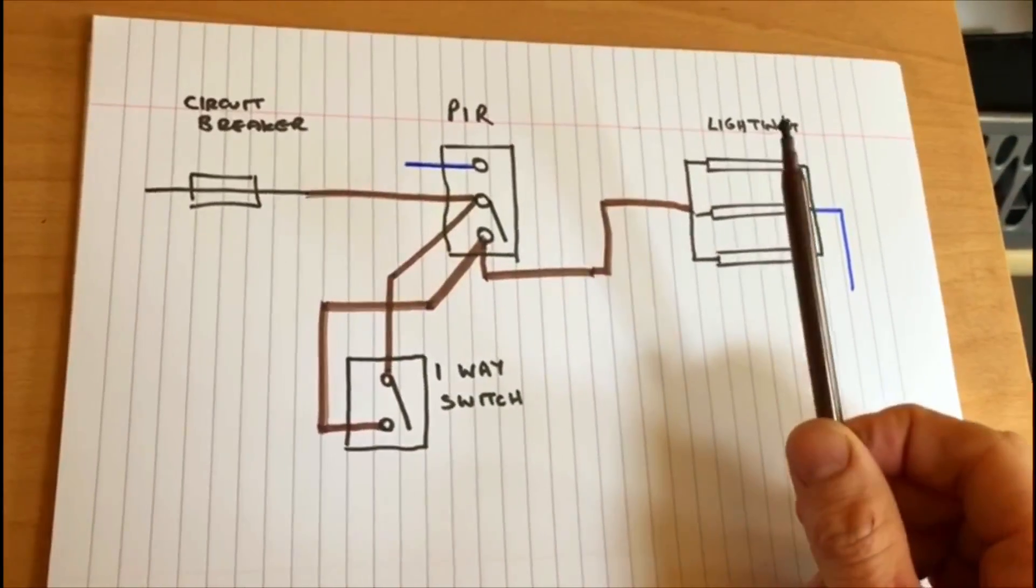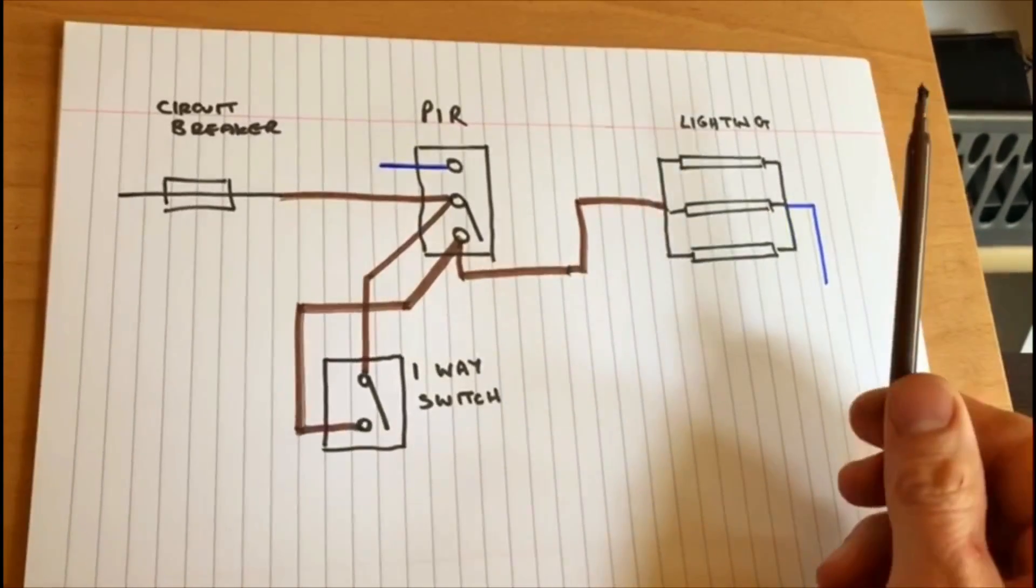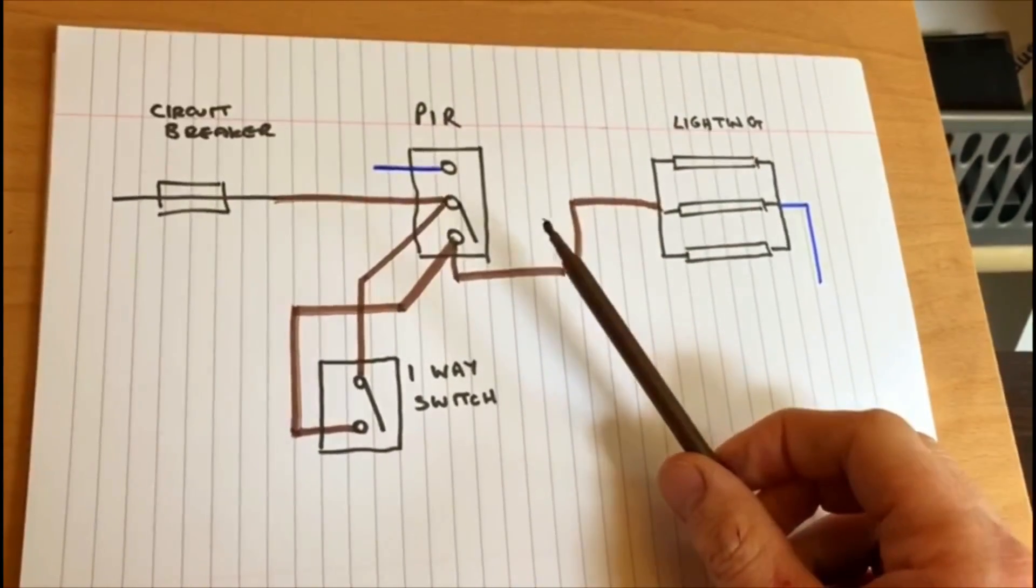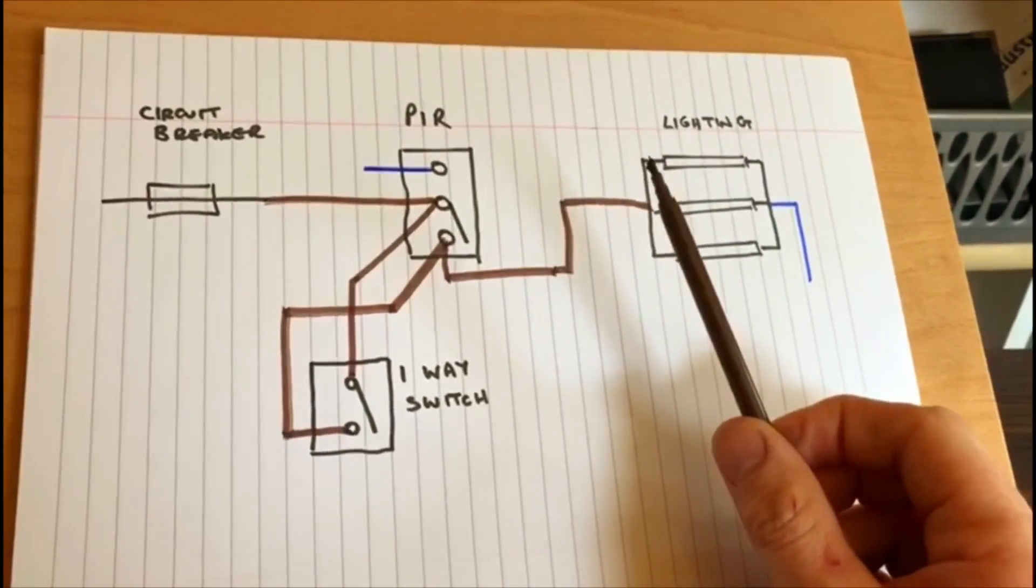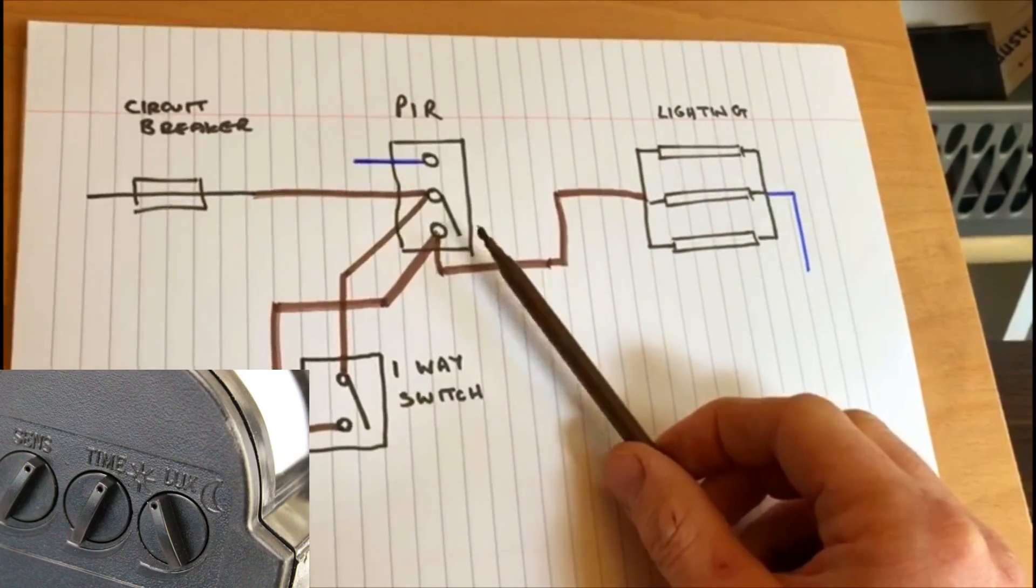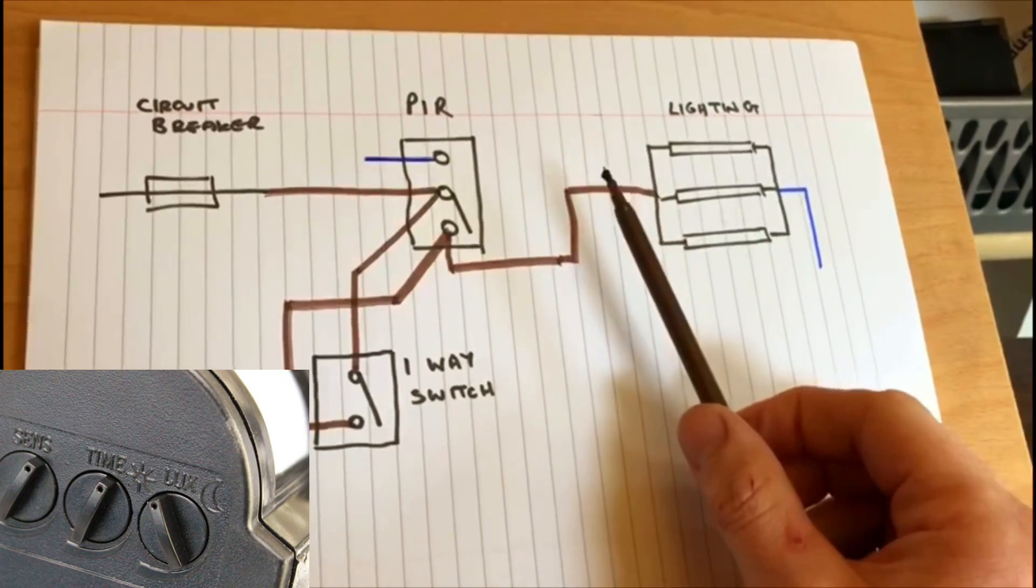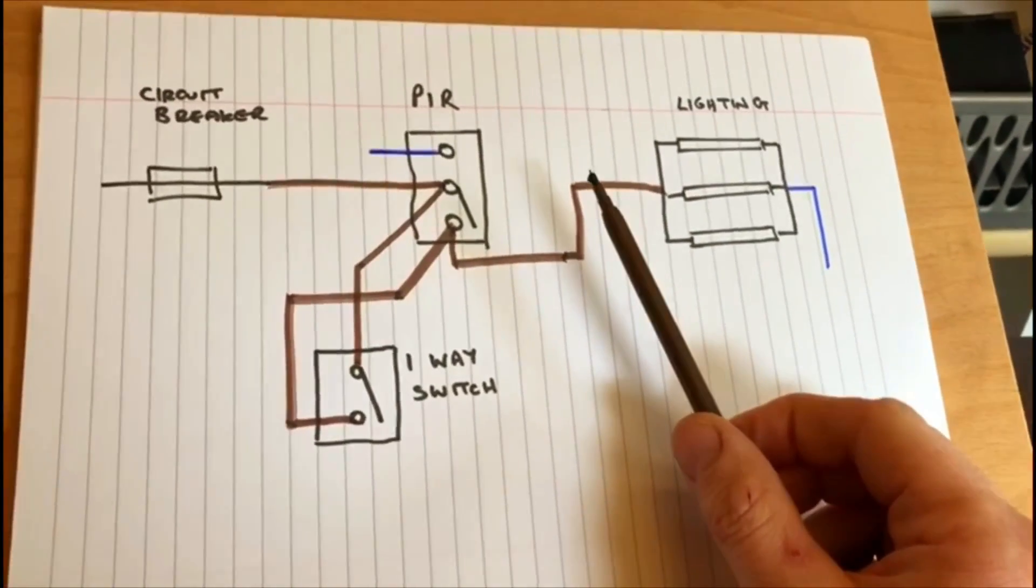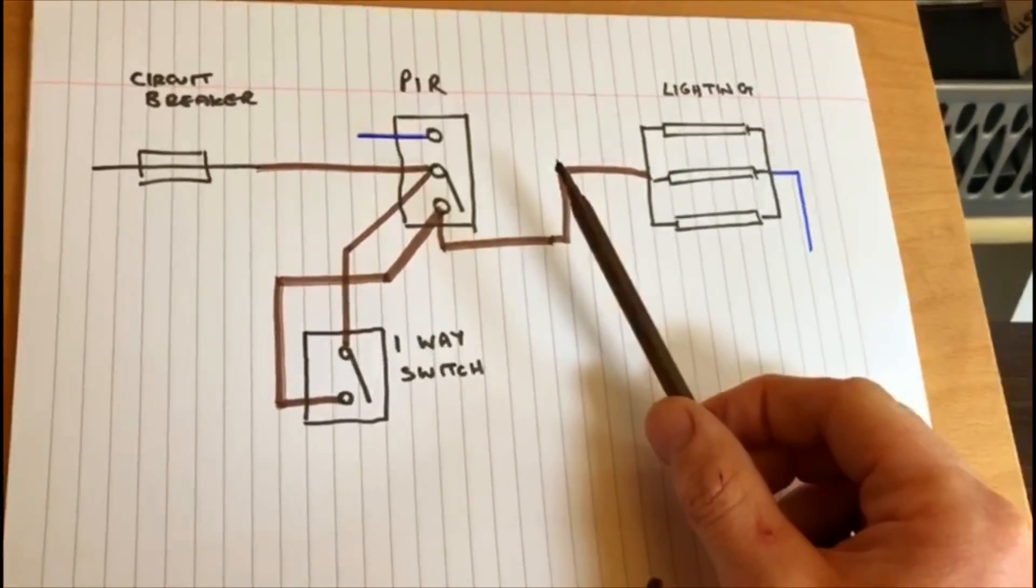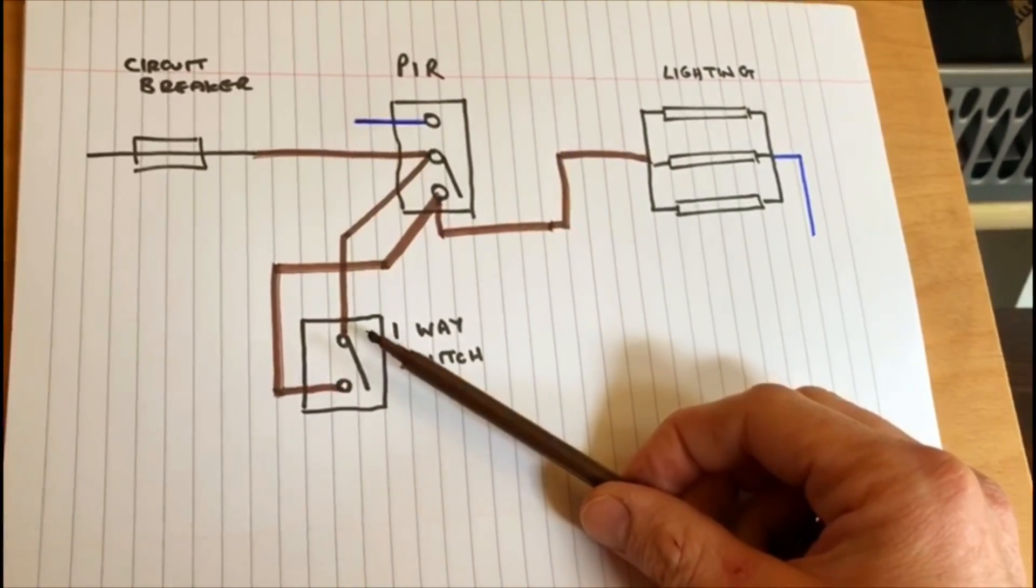Now the only issue is if the PIR has only been set to operate for say maybe 10 seconds, and you've got this in a situation where you might want to be in the place for more than 10 seconds, you can do one of two things. You can either adjust the PIR to last longer, or you can install a manual override switch. And all this is is just a one-way switch. So as you can see now...